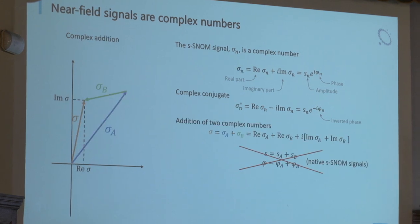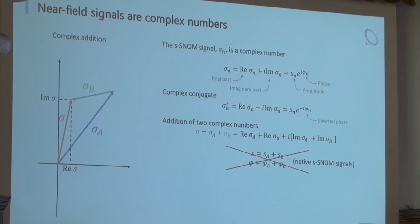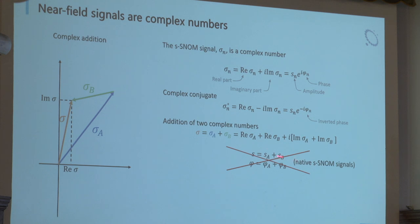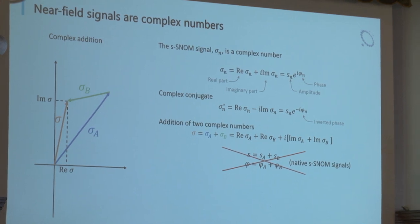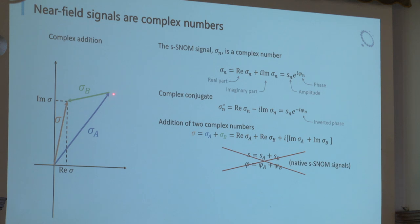How to add complex numbers: it is tempting to add amplitude and phase because those are the native SNOM signals, but this is not correct. You have to work with the real and imaginary parts. In the complex plane you can do this graphically: if you have vector A and vector B, the result is their vector sum. You can see the length does not always increase, so you must use real and imaginary parts — not amplitude and phase.